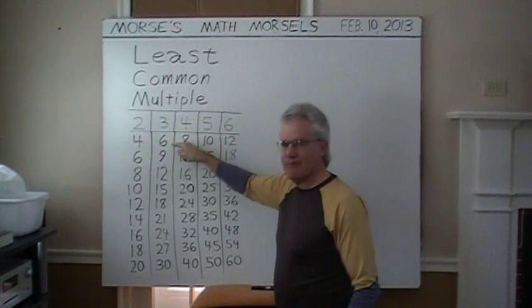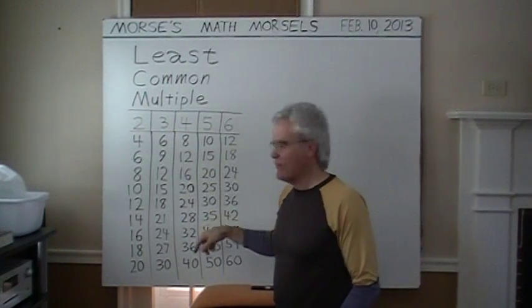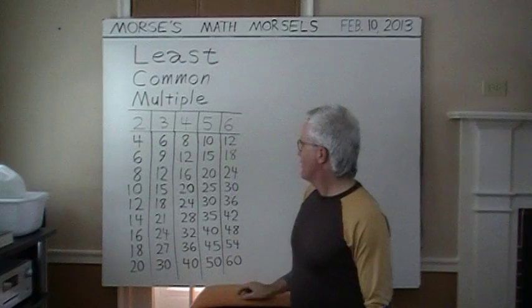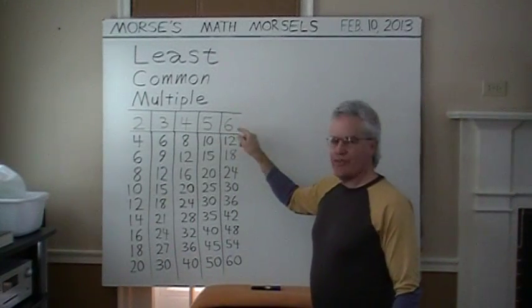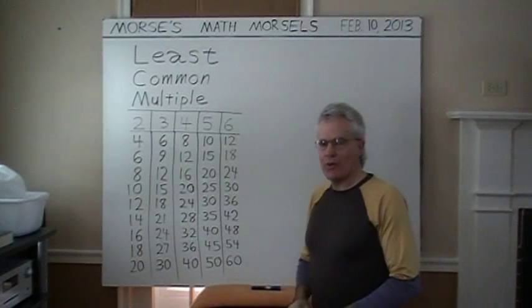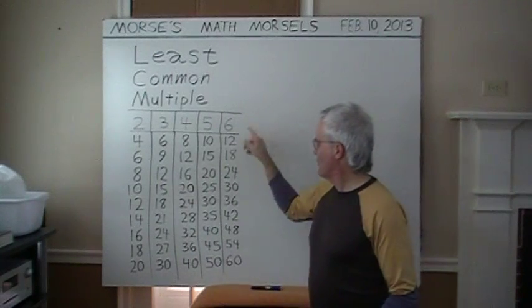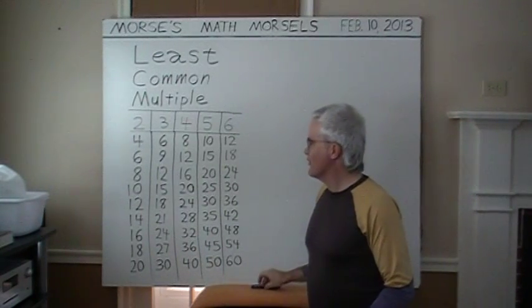Multiples of three are six, nine, twelve, fifteen, et cetera, and so forth for four, five, and six, and all the greater whole numbers. So I just showed a subset of those times tables.